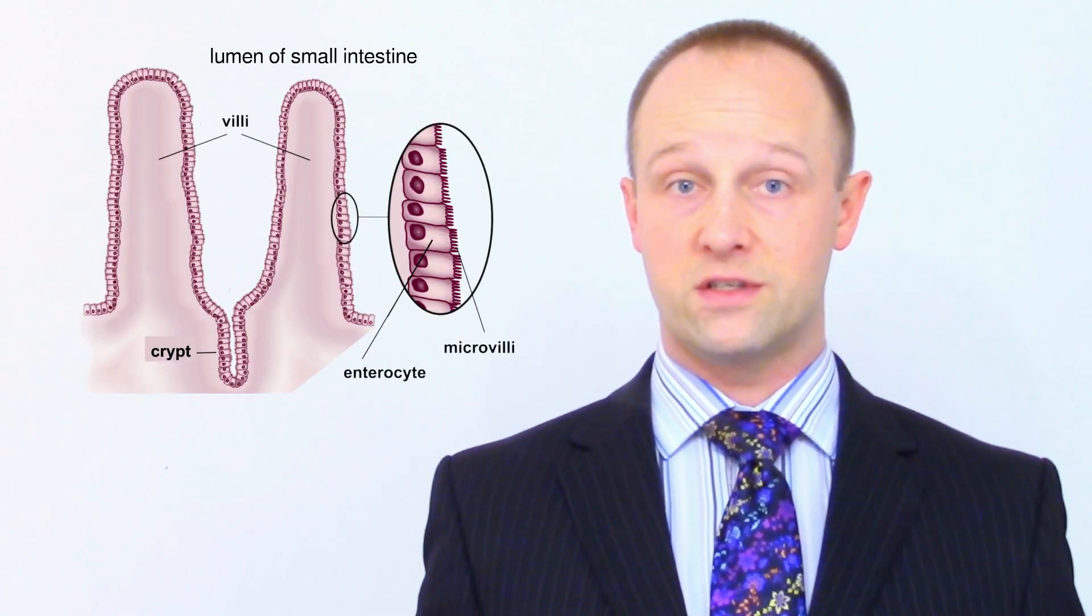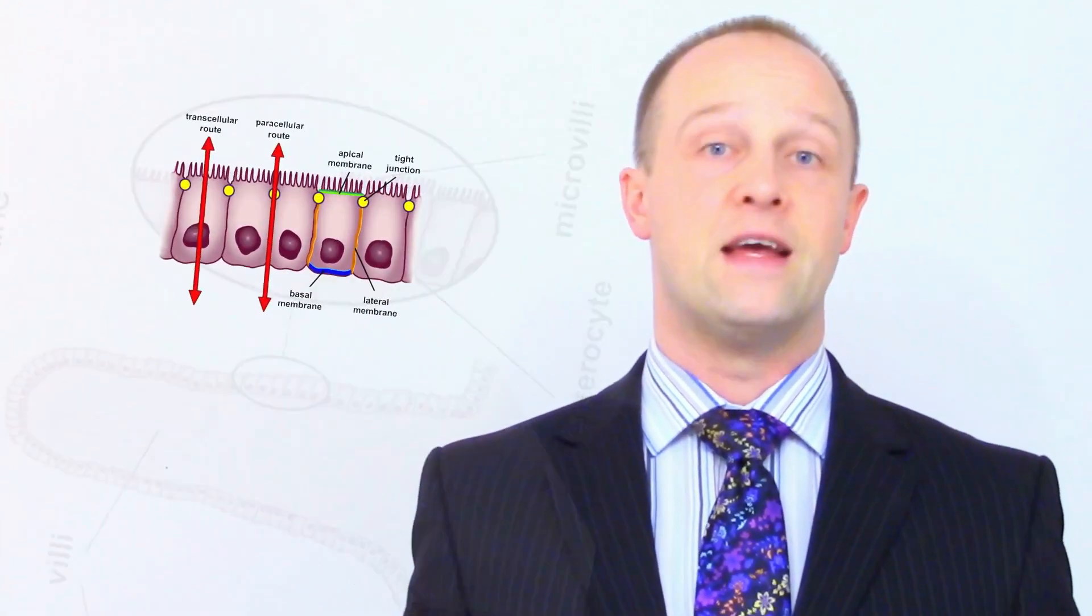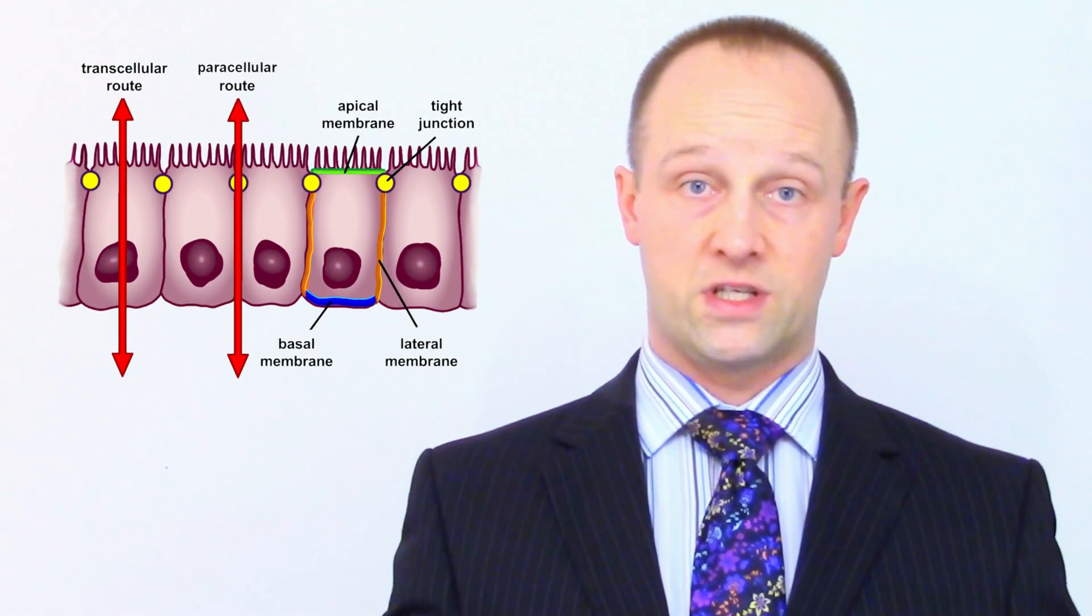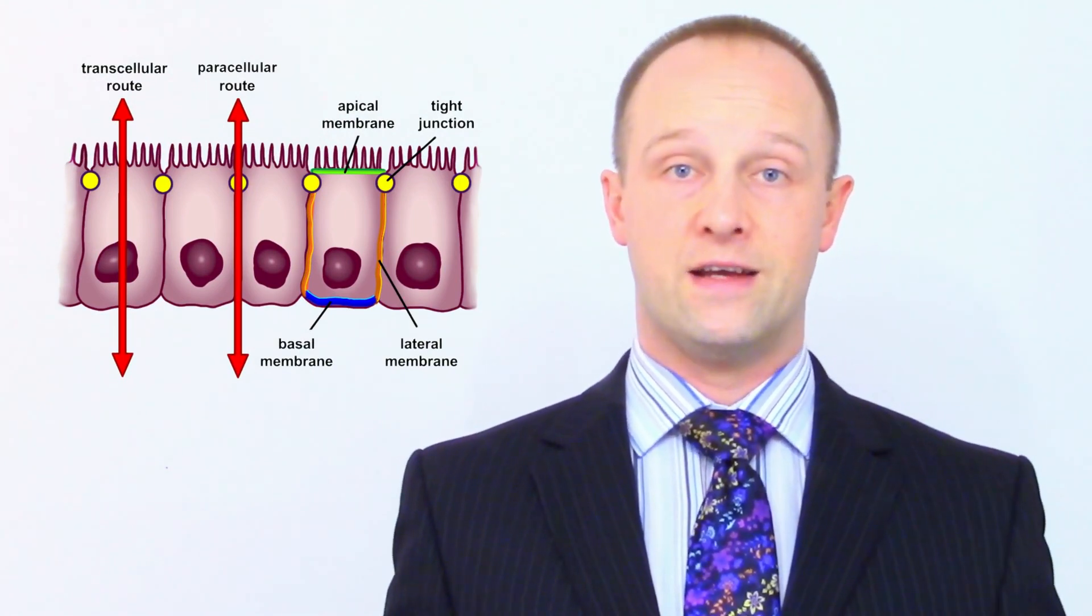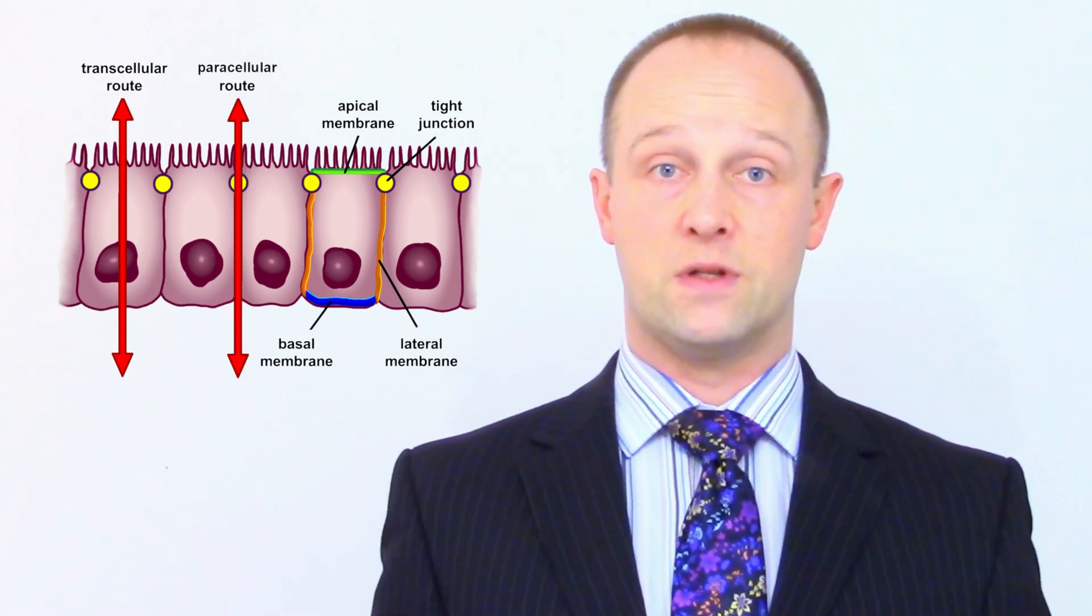In animals like humans, active transport is also essential. In the small intestine, it's needed to get sugar from the low concentration in the digested food in your gut into the higher concentration in the epithelial cells or surface cells of your villi and from there into your blood so that you have glucose available for respiration.